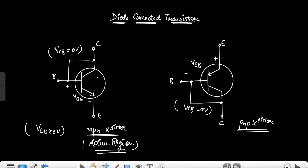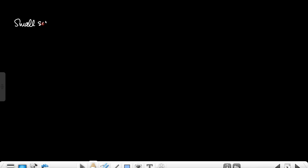For this diode-connected transistor, how does it act as a resistor? To understand this, we have to use the small-signal model of the transistor — the re model, or simply the AC equivalent model of the transistor.